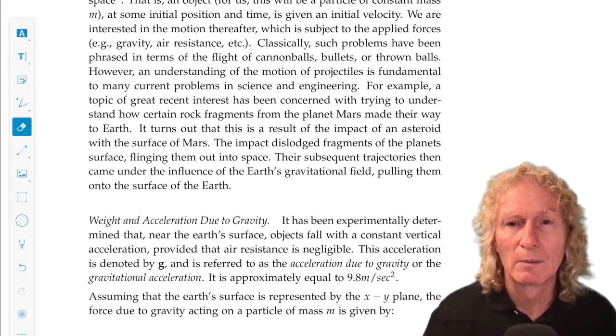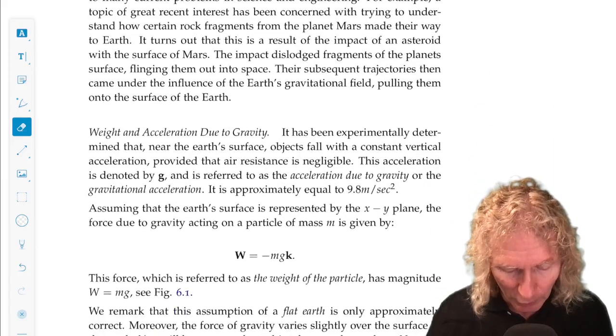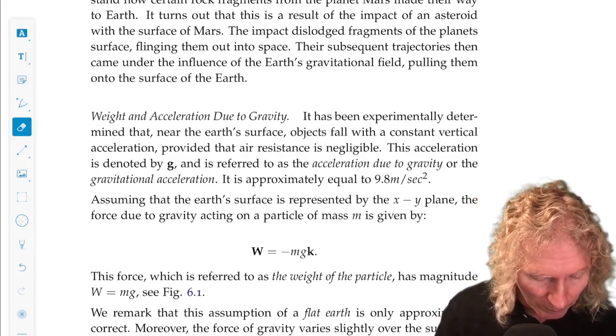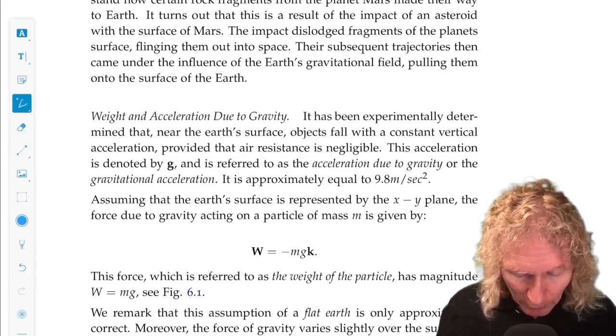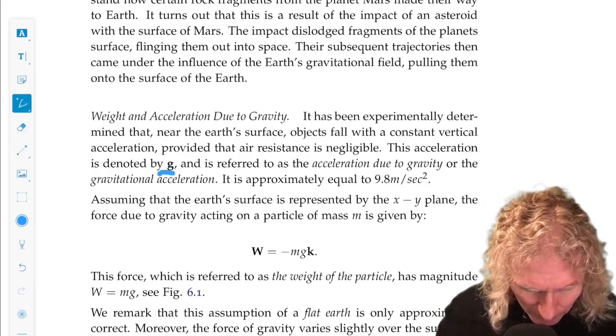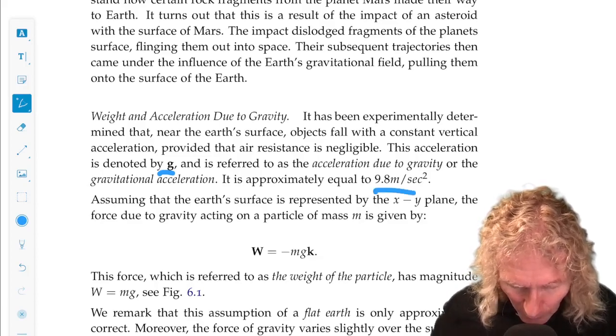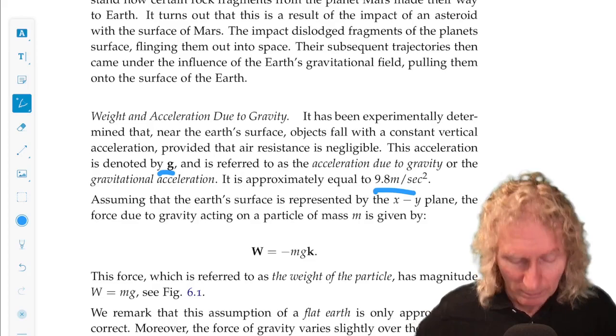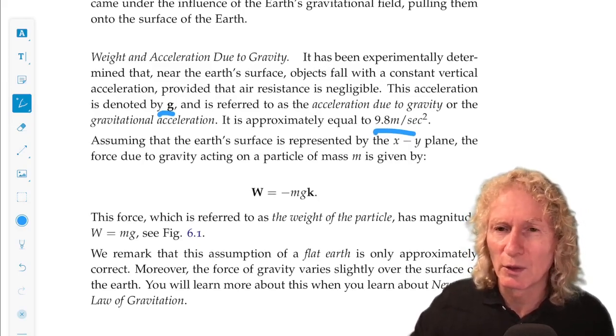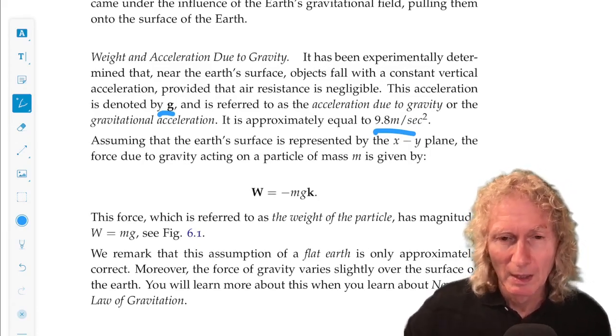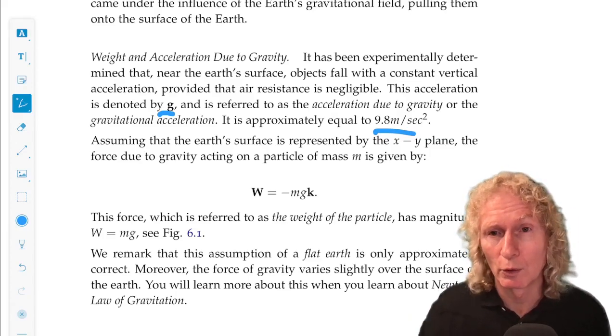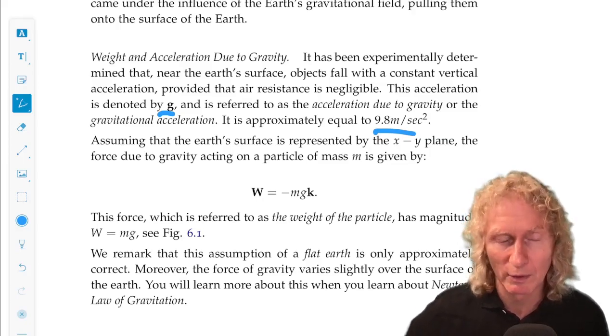So weight and acceleration due to gravity. It's experimentally determined that near the Earth's surface all particles experience the same acceleration due to gravity. We call that g, and its magnitude is 9.8 meters per second squared. And we're going to look at small pieces of the Earth, not the full spherical Earth. So we'll approximate it by a plane. And the k direction will be vertical to that planar piece of the surface of the Earth.